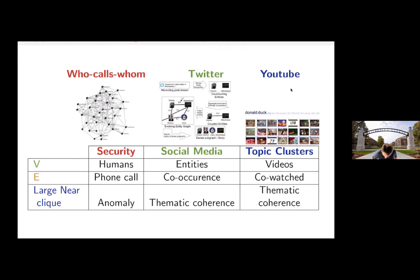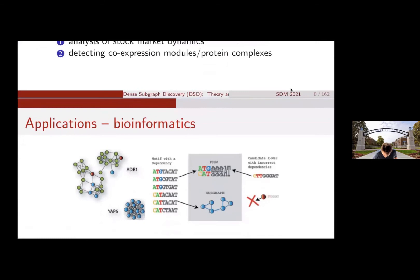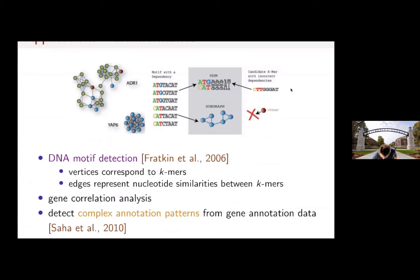Another example he gives is when you look at correlations in some data sets. The vertices correspond to these events and then you have edges that reflect the strengths of correlation between events. He gets some nice pictures of examples from bioinformatics. So much for applications.